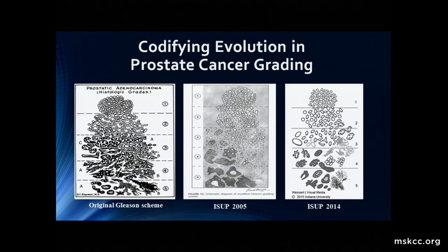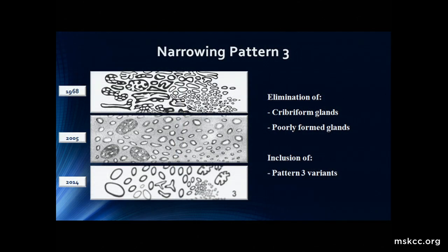The International Society of Urologic Pathology, through multiple consensus conferences — and arguments, frankly — codified this evolution. These are diagrams handed to every first-day resident in pathology as they begin to look at prostate cancer. What this has had the effect of, to really draw it out, is narrowing pattern 3. This is really important from 2005 to 2014, because that squarely enters the era of active surveillance, when we want to be able to say this is a 3 and that's not. The elimination of cribriform glands and poorly formed glands from pattern 3 have been the major effects here.